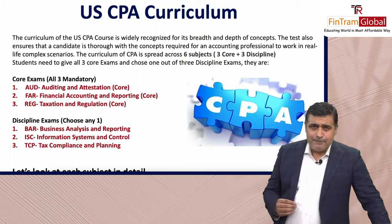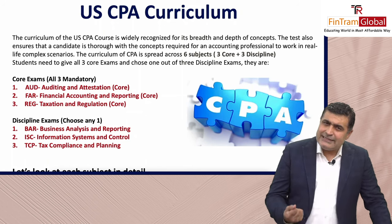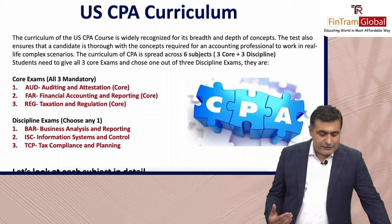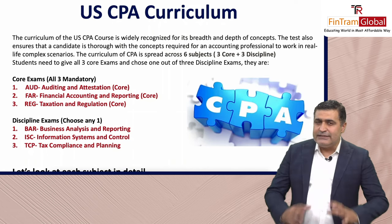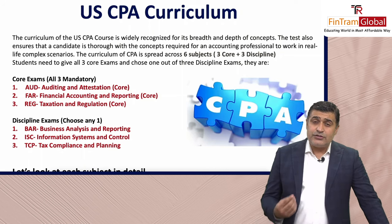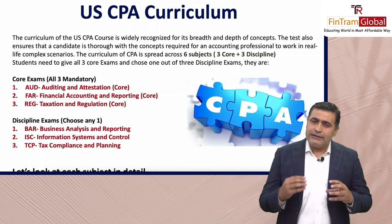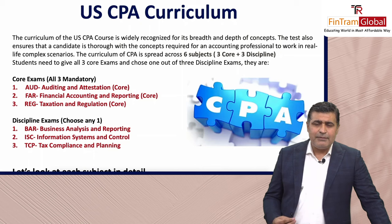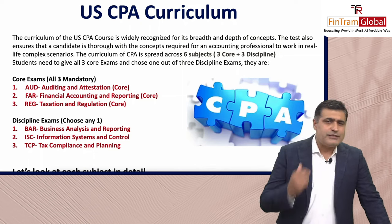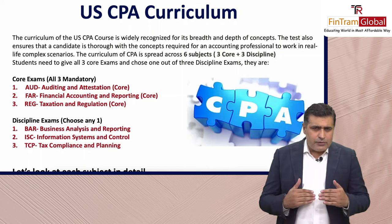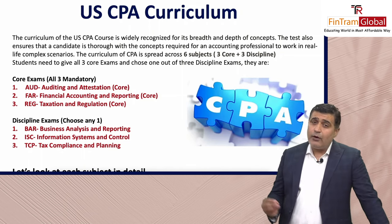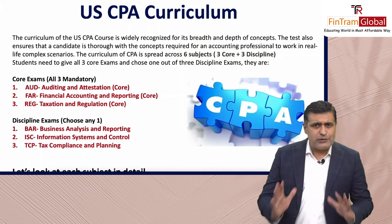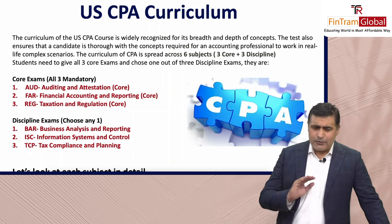BAR builds on what you learned in Financial Accounting and Reporting and adds some advanced content plus business-related studies and economics. ISE — Information Systems and Control — deals with data management, information systems, securitization, and related risk and control issues. TCP — Tax Compliance and Planning — is like the big brother of the Regulation and Taxation exam, covering tax compliances for individuals and corporates and how to manage and plan them. You choose one from these three discipline exams and move forward.